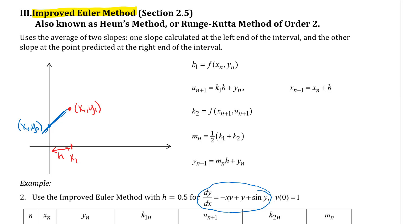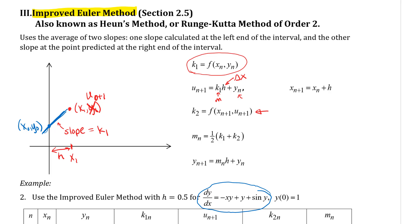What this method does — I just want to explain the notation a little bit — is this first k1 here is the slope for that first line segment. Then u_{n+1} equals k1 times h plus y_n. Remember that h is our delta-x, k is a slope, and y_n is a y-coordinate, so that would be your prior y-coordinate. For this first iteration, u_{n+1} is really your y-coordinate of that second point.